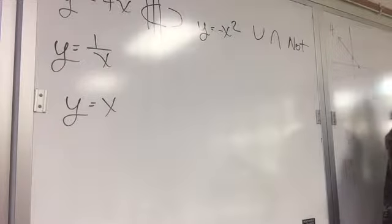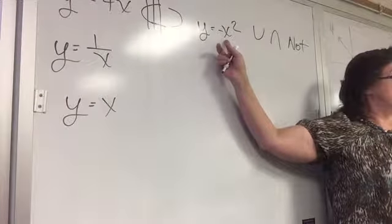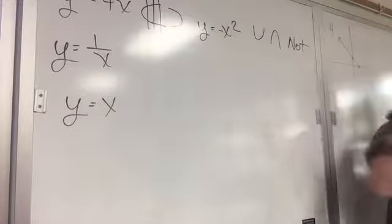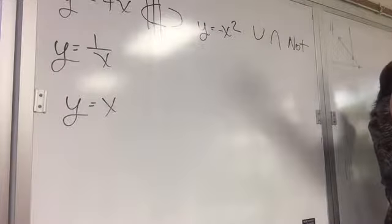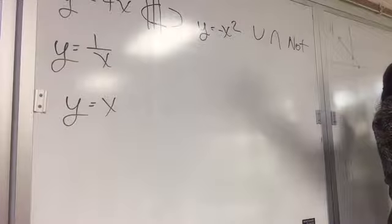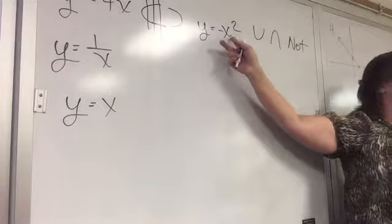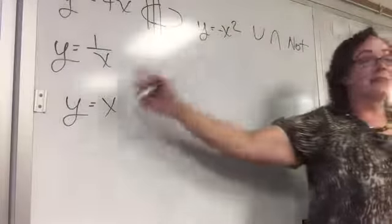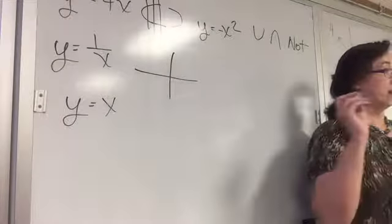If you had Y equals X squared, that's an up-opening parabola — it would pass the vertical line test, so it is a function. But the Y-squared right-facing parabola does not pass the vertical line test, so it is not a function. This circle-like shape we talked about extensively — you should always recognize it.